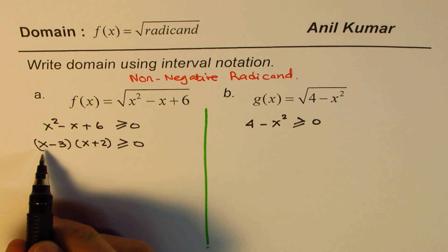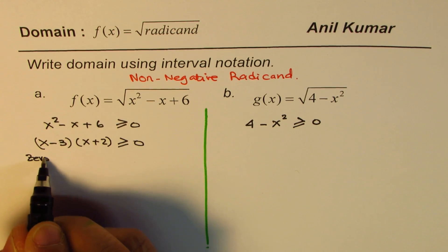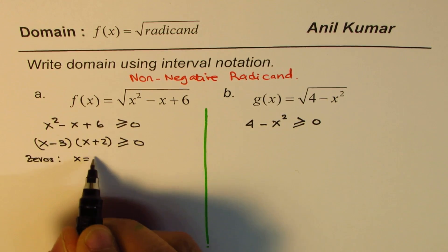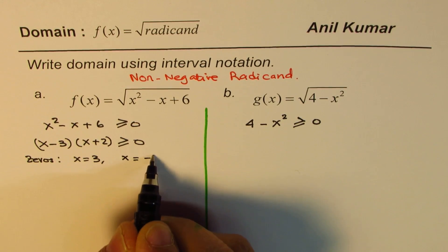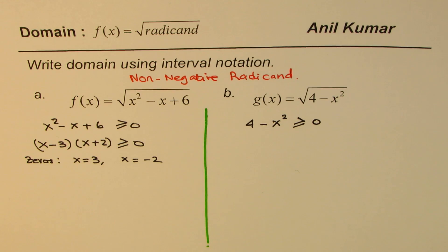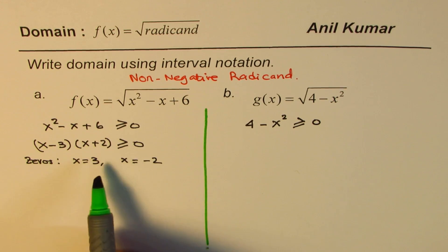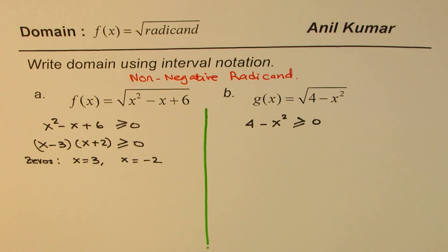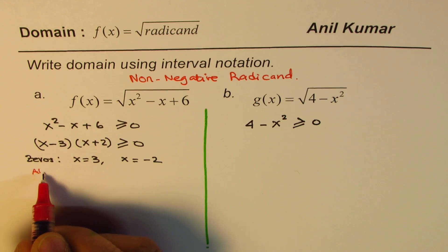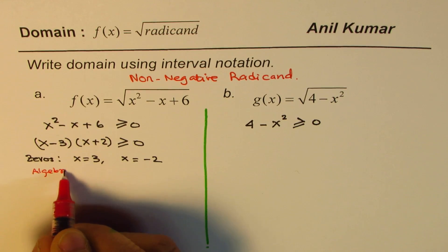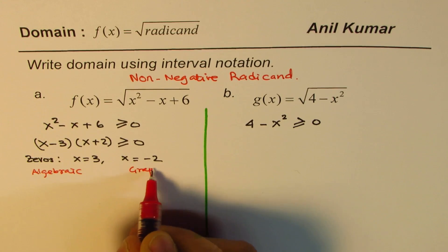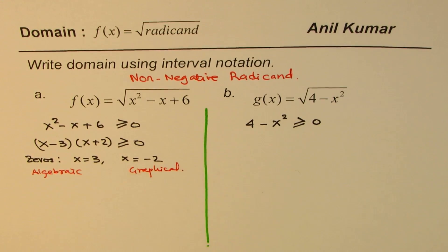Now we know from here that it has zeros at x equals 3 and at x equals minus 2. Knowing these zeros, we could actually graph the function and find the solution. That's an easy way of doing it. Or we could go for the interval test. So there are two methods from here. We could do either algebraic method or graph method.